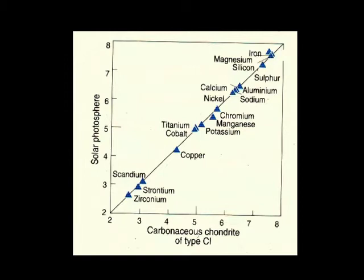Now that's really interesting, because the asteroids are out there past Mars, and the Sun's in the middle. So that's kind of telling us that the Earth, as a whole, is made of this chondrite material.